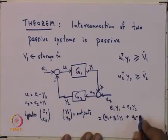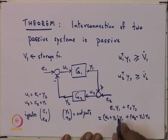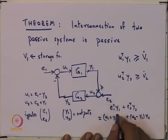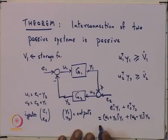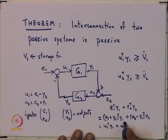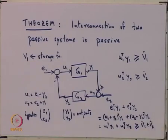Of course, there are these transposes, but that really does not matter. Now you see you have a Y2 transpose Y1 and you have a Y1 transpose Y2, but with negative sign, so they sort of cancel. So, what you are left with is U1 transpose Y1 plus U2 transpose Y2, which from these two inequalities, you know is greater than equal to V1 dot plus V2 dot. Now what does this mean?